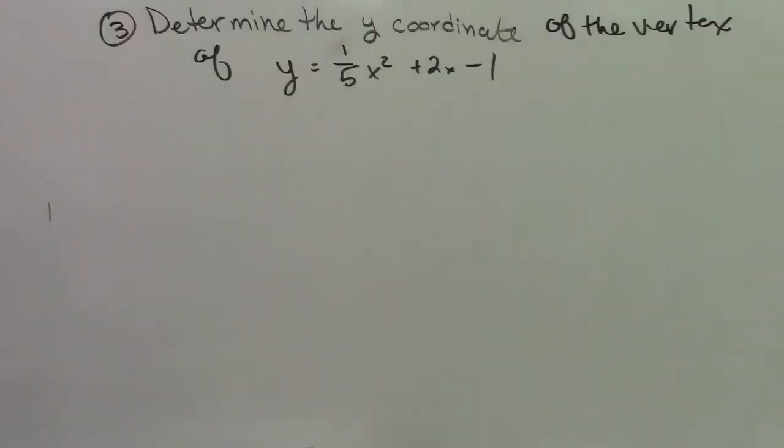Alright, so the final question is question number 3: determine the y coordinate of the vertex of y equals 1 fifth x squared plus 2x minus 1.